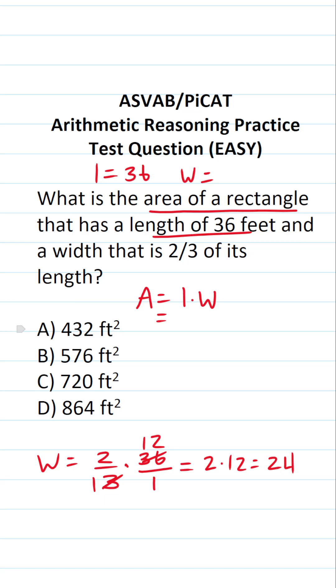So now we can calculate our area of the rectangle. It's going to be 36. We know our width is 24. So this is 36 times 24. I can't do this mentally, so I'm going to do it off to the side. We have 36 times 24.